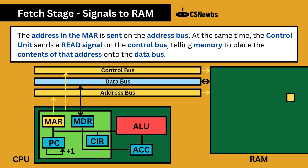The address in the MAR is sent on the address bus. At the same time, the control unit sends a read signal on the control bus, telling memory to place the contents of that address onto the data bus.